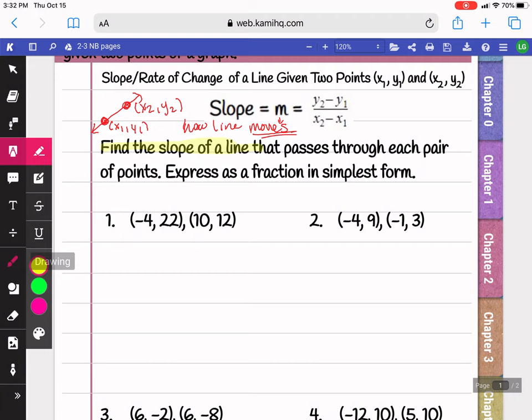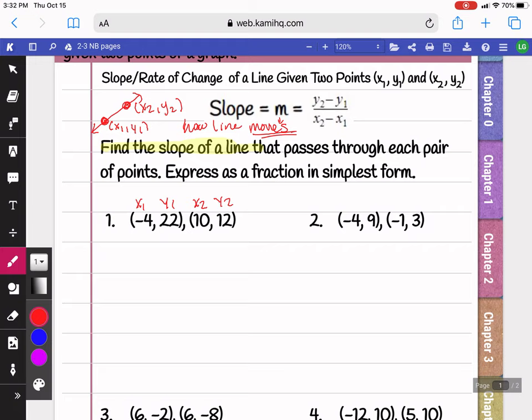So here I'm going to label my x1, y1, x2, y2 because my first point is my x1, y1. My second is my x2, y2. Then I'm going to plug these into my slope formula. So for y2, I'm going to plug in 12 minus y1 is 22. For x2, I plug in 10. And for x1, I plug in negative 4.